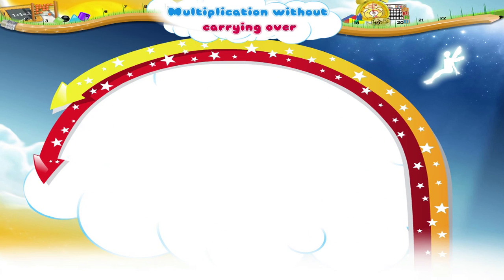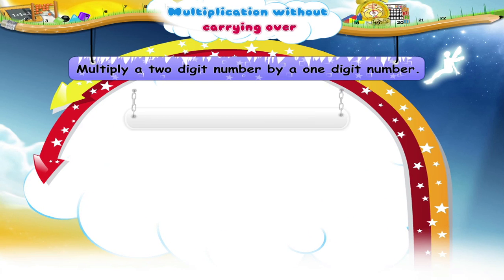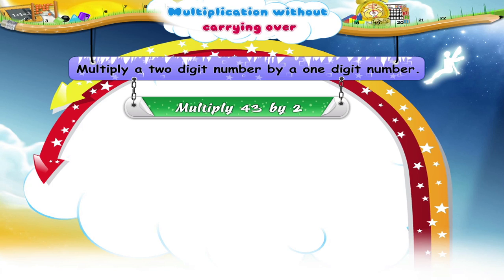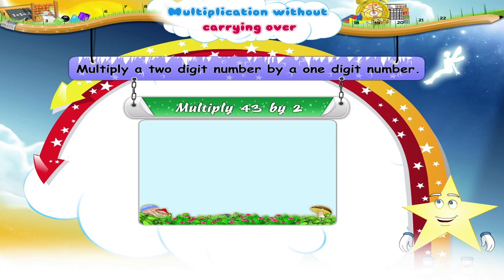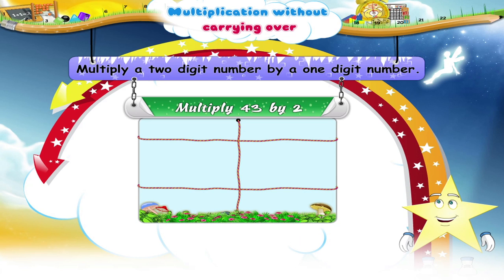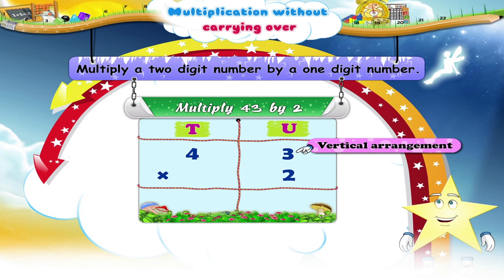Now let me teach you how to multiply a two-digit number by a one-digit number. It's simple, believe me! The first step, Starry, is to write down T for the digits in the tens place and U for the digits in the units place. Then arrange the numbers you have to multiply vertically.